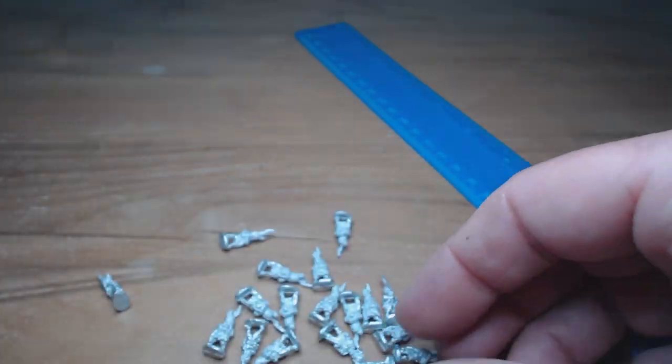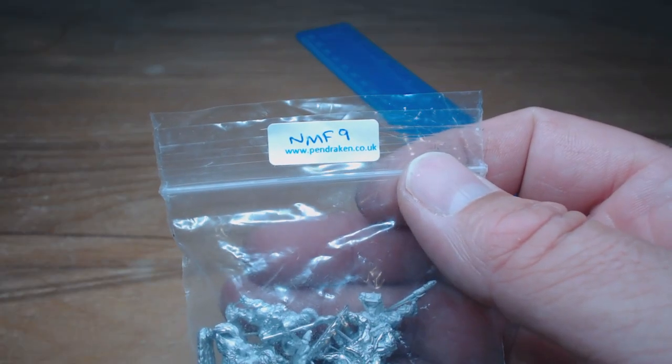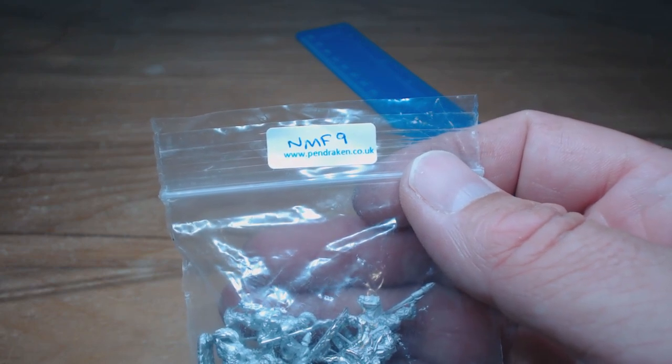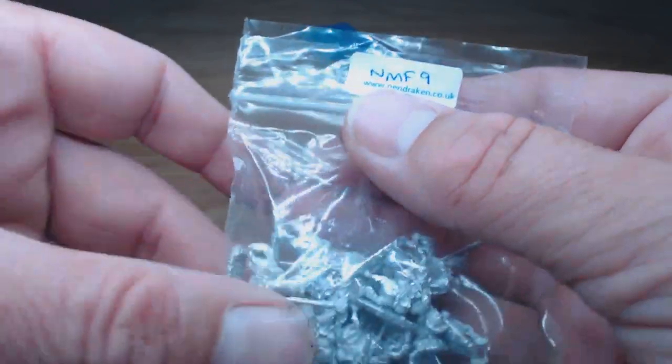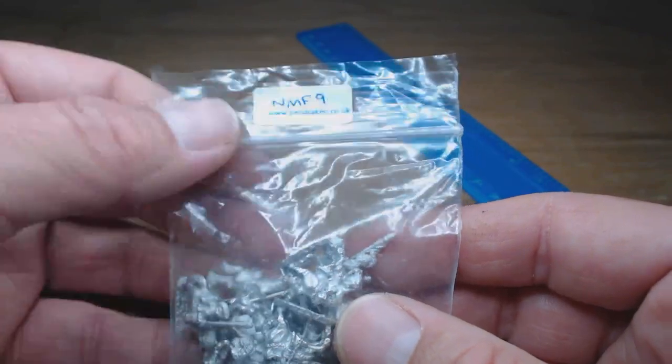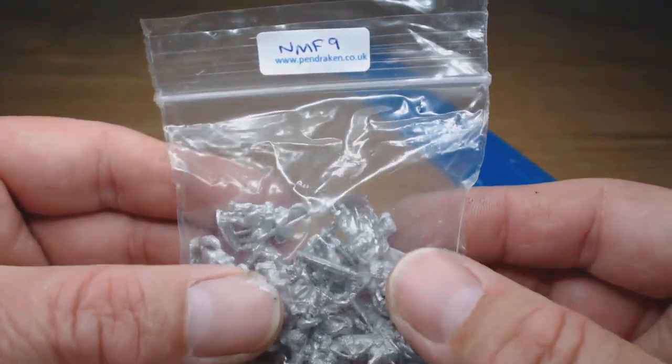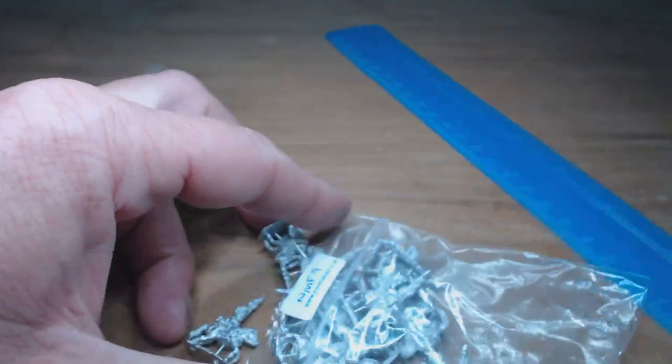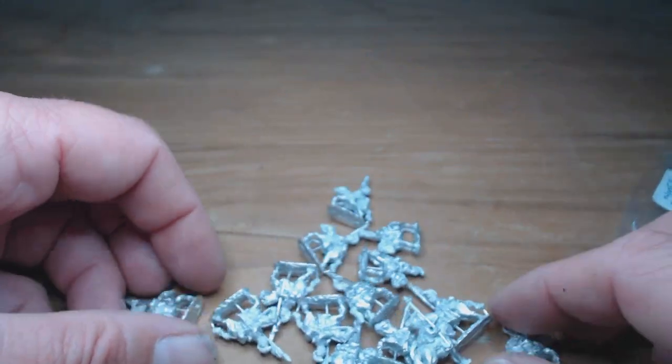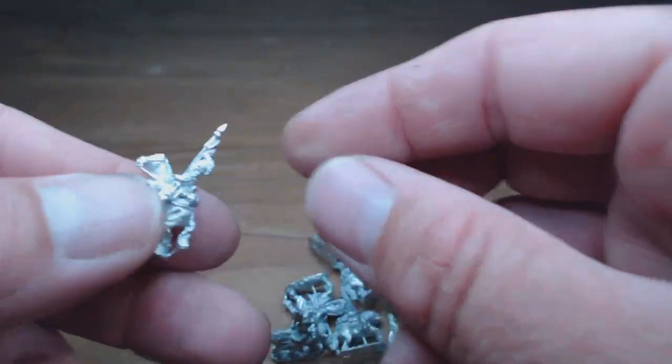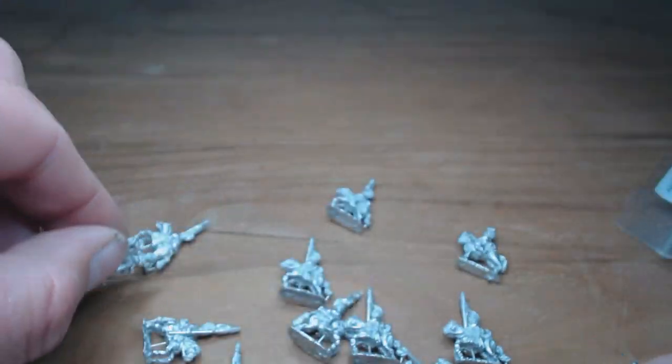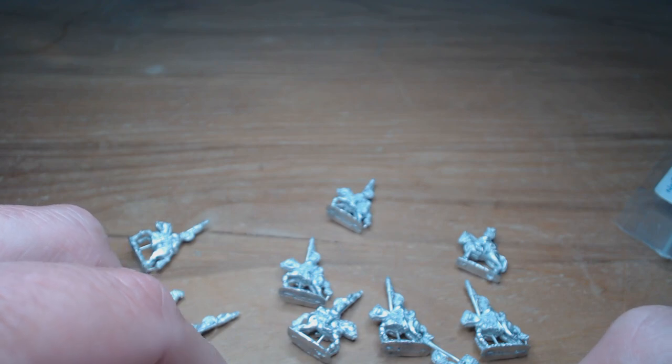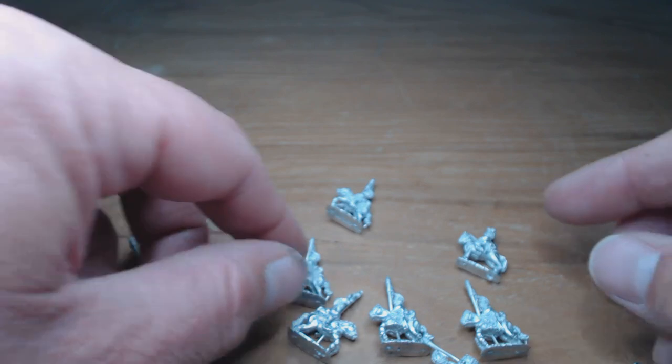Next one is NMF9 and these are chevau-légers, the lighter version of the cavalry. I think the dragoons are the heavier cavalry, so the lighter of the two cavalries. We don't appear to have any skirmishers so that'd be an advantage for the British because even though we've got less grenadiers we do have some rifles. Now we're going to look through here, we've got a standard, probably a musician, an officer and 12 troopers.